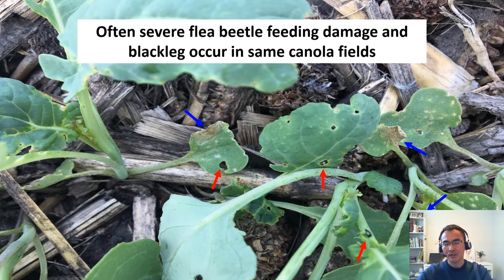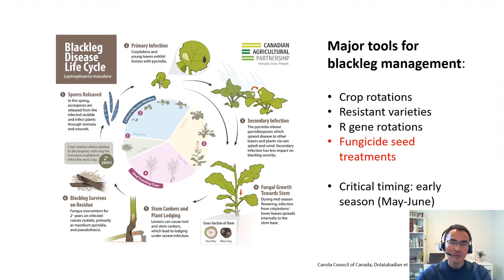When you walk into a canola field, it is possible to see that when there is enough black leg inoculum and flea beetle populations, black leg and flea beetles can cause damages simultaneously, especially at the seeding stage. That's why black leg and flea beetle management are so important, and sometimes could be very challenging as well.